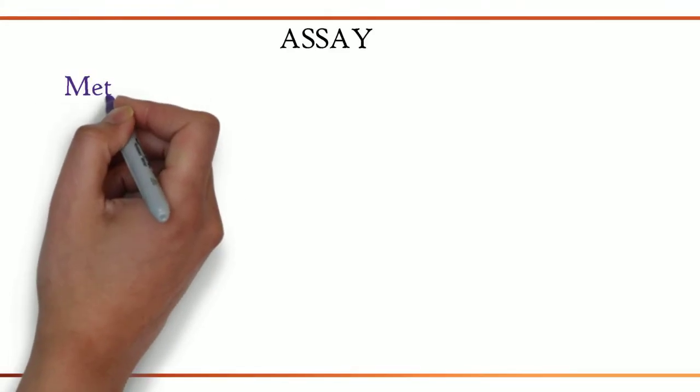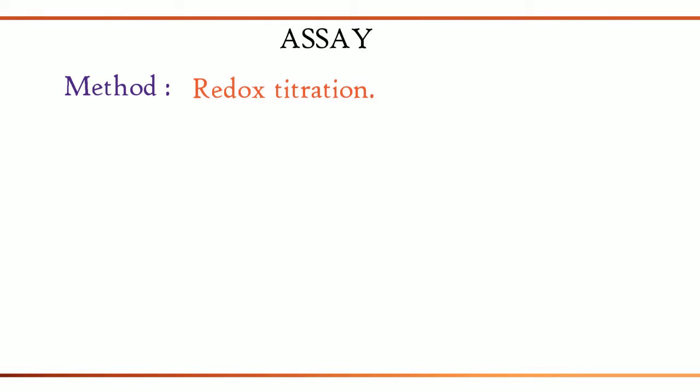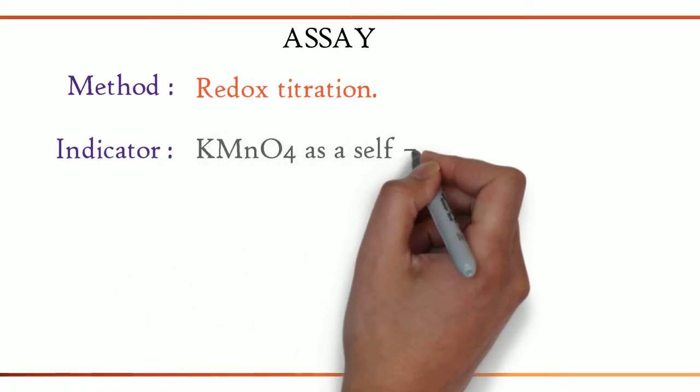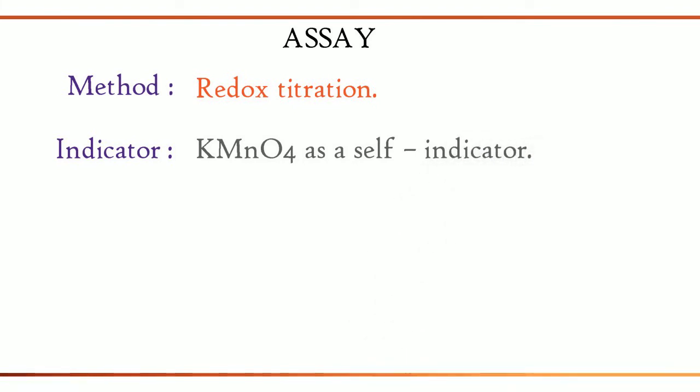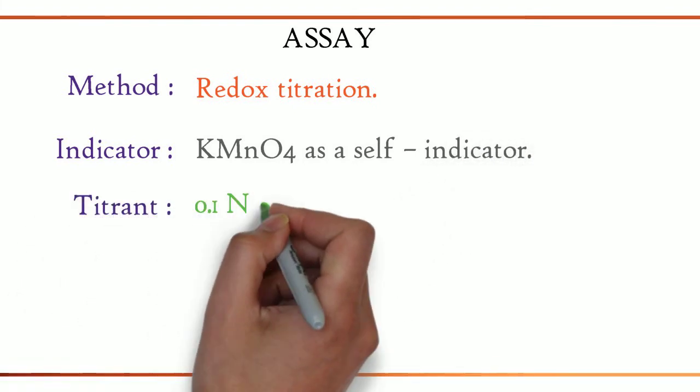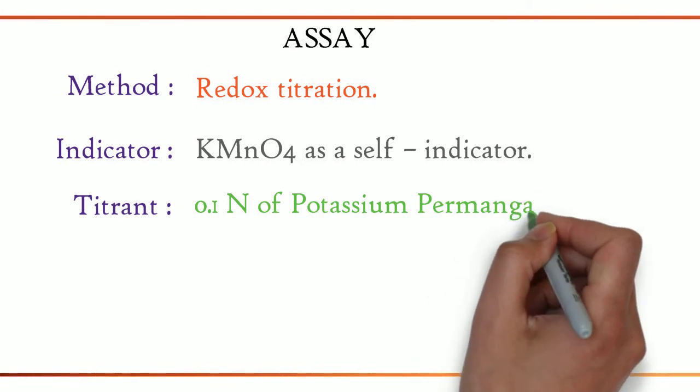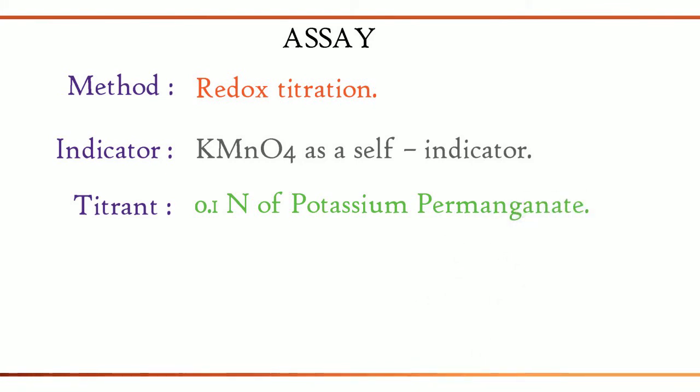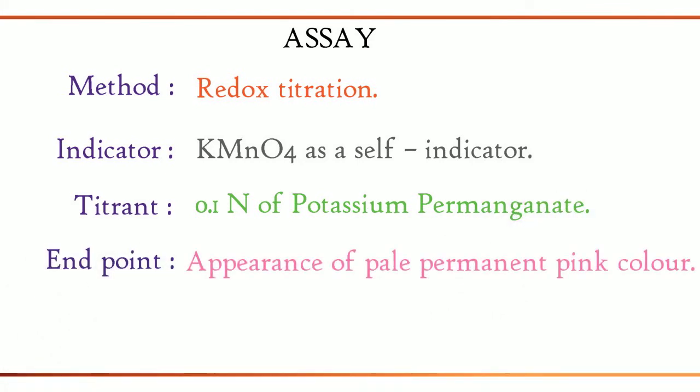Assay method: redox titration. Indicator: potassium permanganate as a self-indicator. Titrant: 0.1 normality of potassium permanganate. End point: appearance of pale permanent pink color.